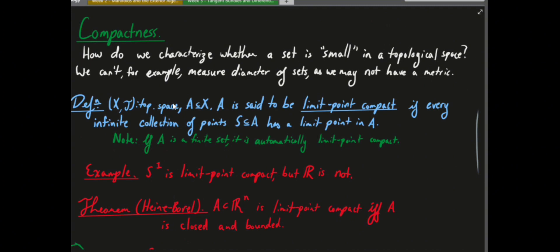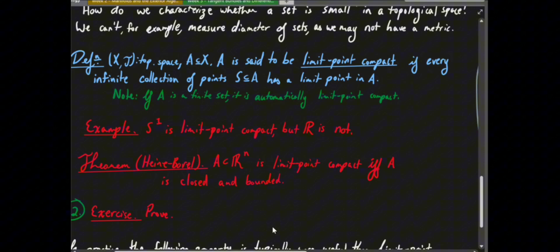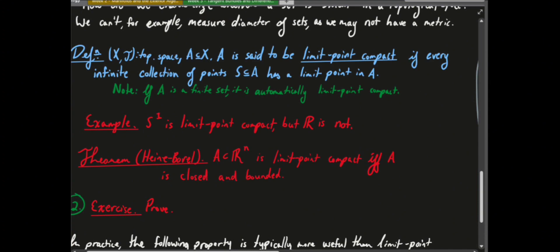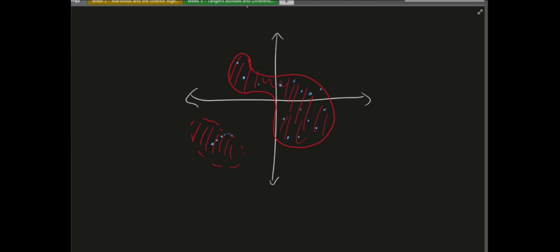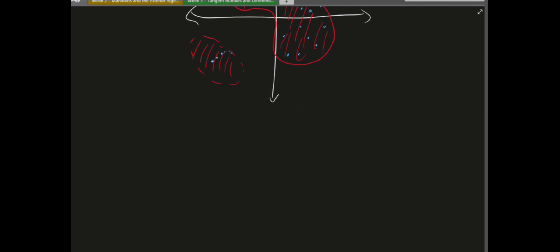It's a theorem due to Heine and Borel that limit point compactness in subsets of Rn is equivalent to being closed and bounded. S1 is limit point compact: draw a circle, try to stuff infinitely many points in there, and they'll always cluster somewhere — you must get a limit point.